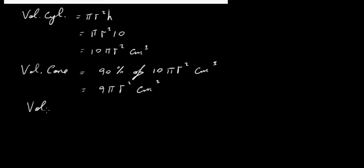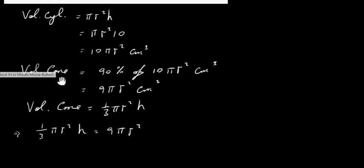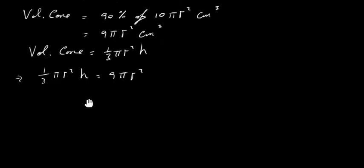Now the volume of a cone is just a third pi R squared H. So that means we have a third pi R squared H equal to 9 pi R squared. This is the volume of our actual cone. So that's equal to a third pi R squared H.